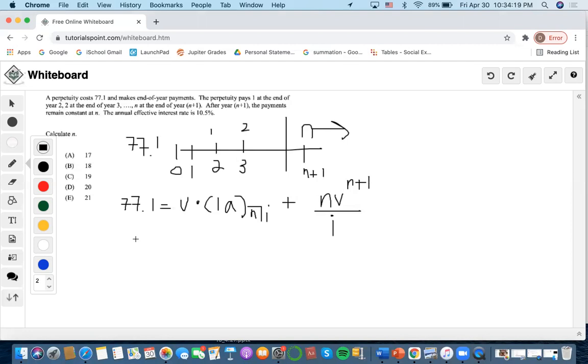We know that the level annuity equation is ä_n minus n times v^n over i, multiplied by v.